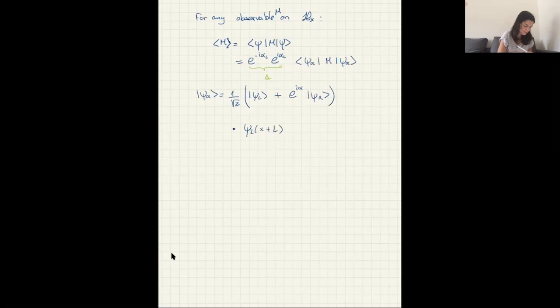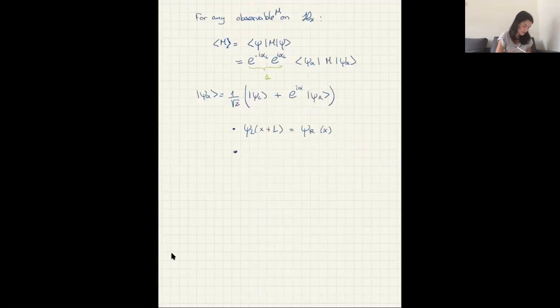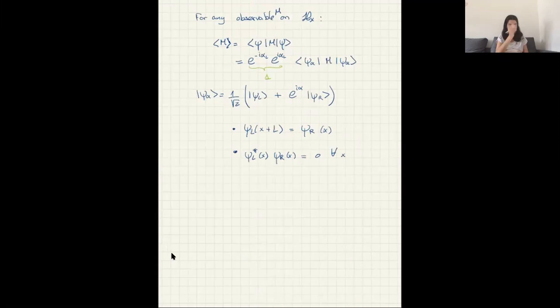We know that ψ_right(x) = ψ_left(x+L), and there's one more property: in the initial state the two wave functions never overlap — wherever one is non-zero, the other is zero. Later they will evolve and overlap; that's the whole point. But for now we can write that ψ_left*(x)·ψ_right(x) = 0 for all x.